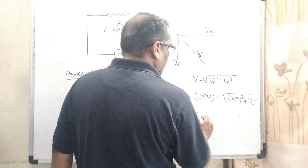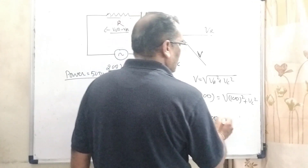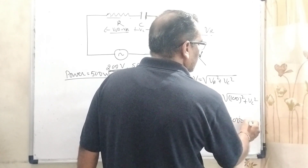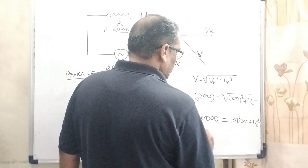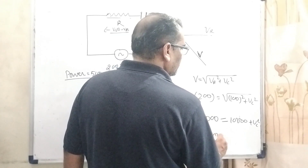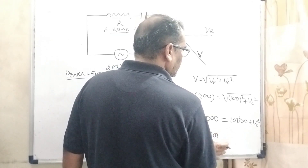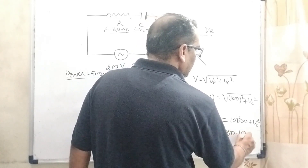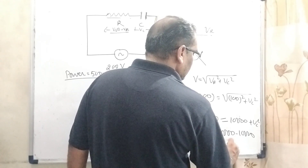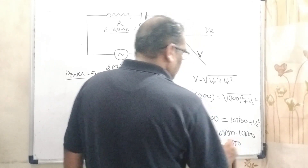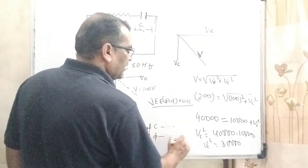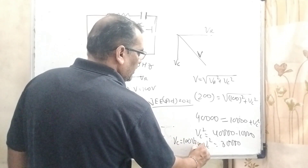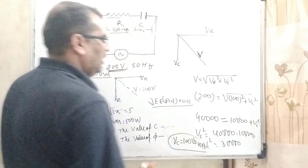Squaring both sides: 40,000 equals 10,000 plus V_C squared. So V_C squared equals 40,000 minus 10,000, which equals 30,000. Therefore V_C equals 100√3 volt.